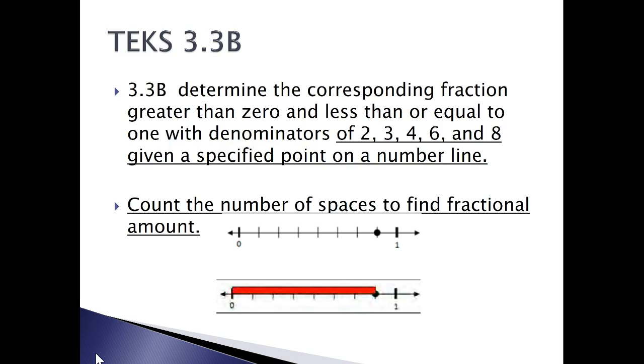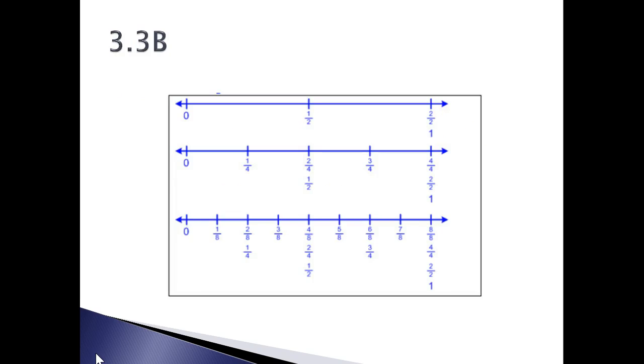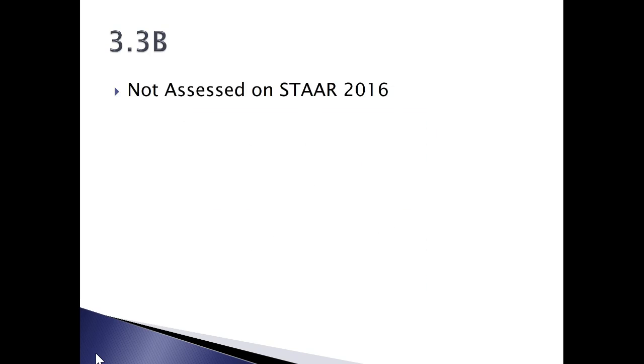TEKS 3.3B says to determine the corresponding fraction greater than zero and less than or equal to one with denominators of two, three, four, six, and eight, given a specified point on a number line. This is a good time to bring out the open-ended number lines that you received from EAI last year with all of our manipulatives. Notice when we look at number lines, we're counting the spaces, not the hash marks. Here's an example of how when you set up your number line, it has hooks that you can attach the one-half to the two-fourths to the four-eighths so the kids can see that those are all equivalent fractions.